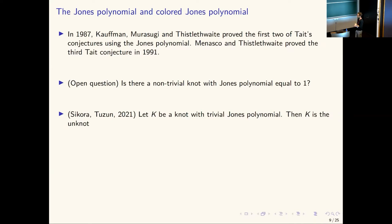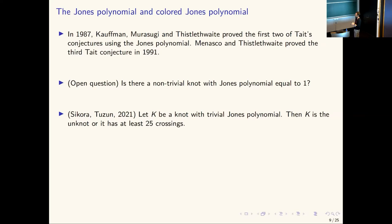There are many things we don't know about the Jones polynomial. One open question: is there some non-trivial knot — one that is not the unknot — with Jones polynomial equal to one? We know there are infinitely many inequivalent knots with the same Jones polynomial, but this question remains open. A recent result of Ichinofuji and Tunza from 2021 says: if a knot has trivial Jones polynomial, either it's the unknot, or it has at least 25 crossings.